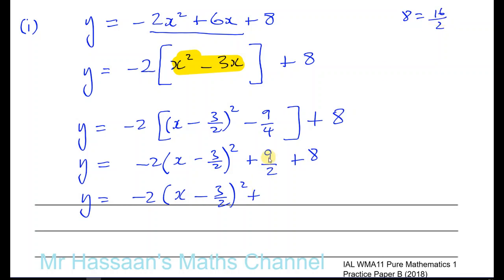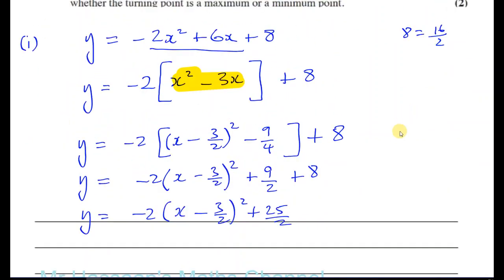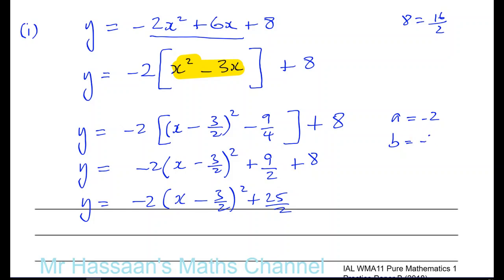So we've completed the square. The answer to Part A is: y equals minus 2 times x minus 3 over 2 squared plus 25 over 2. That gives us a equals minus 2, b equals negative 3 over 2, and c equals 25 over 2. That's minus 1.5 for b and 12.5 for c.